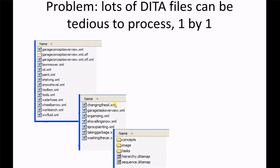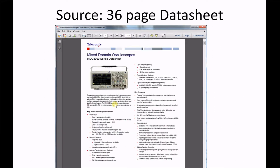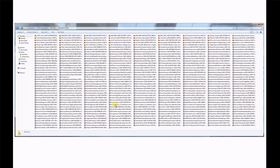The problem is that DITA projects are typically lots and lots of files, and they're tedious to process one by one. DITA projects can consist of hundreds, thousands, or even millions of topics. Localization service providers can process DITA topics, but it's not their core competency — their core competency is translating — so they rightfully charge extra for the overhead. Consider this example: a 36-page data sheet consisting of 32 DITA maps, 283 DITA topics, and 46 images as SVG or PNG. That's a lot of files.